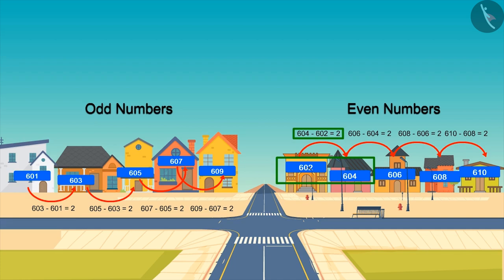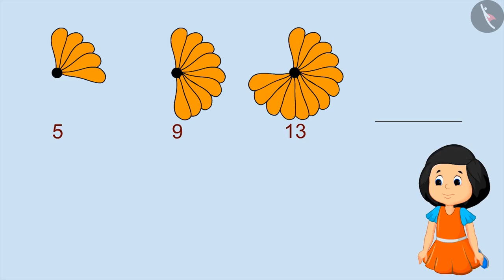Look what Muni is making. It seems today she is making a paper flower. She applied five petals in the first round of the flower, then nine, then thirteen. Can you tell how many petals Muni will put in the next round?